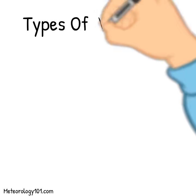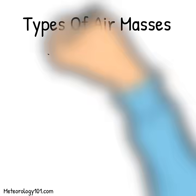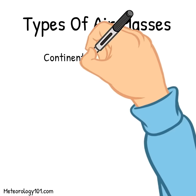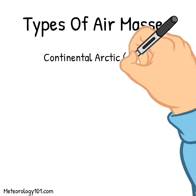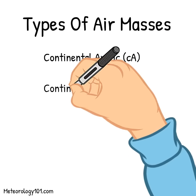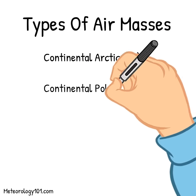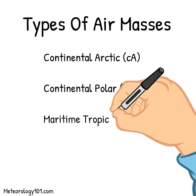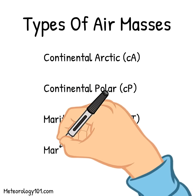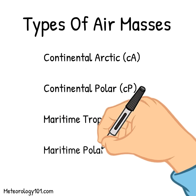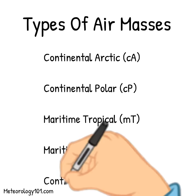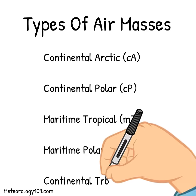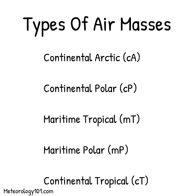The five types of air masses are: continental Arctic, continental polar, maritime tropical, maritime polar, and continental tropical.